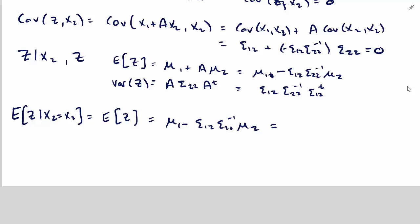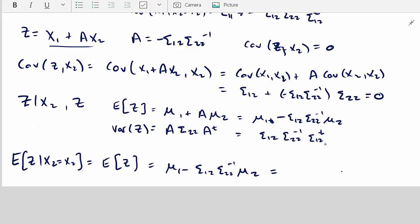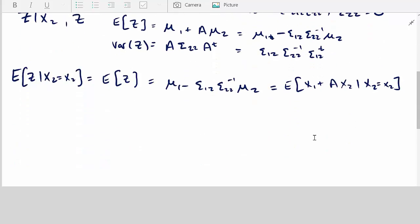But we can also write out the expected value of z as the expected value. Remember the definition of z, which we've written up here. And that works out to be then that we can write this as the expected value of x1 plus ax2 given x2 equals little x2. So we then can write the expected value of x1 given x2 plus a expected value of x2 given x2.